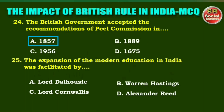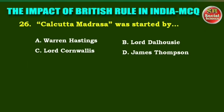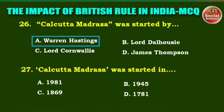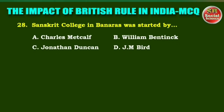Next question: Calcutta Madrasa was started by — options are: Warren Hastings, Lord Dalhousie, Lord Cornwallis, James Thompson. The right answer is option A: Warren Hastings. Next question: Calcutta Madrasa was started in — options are: 1981, 1945, 1869, 1781. The right answer is option D: 1781.